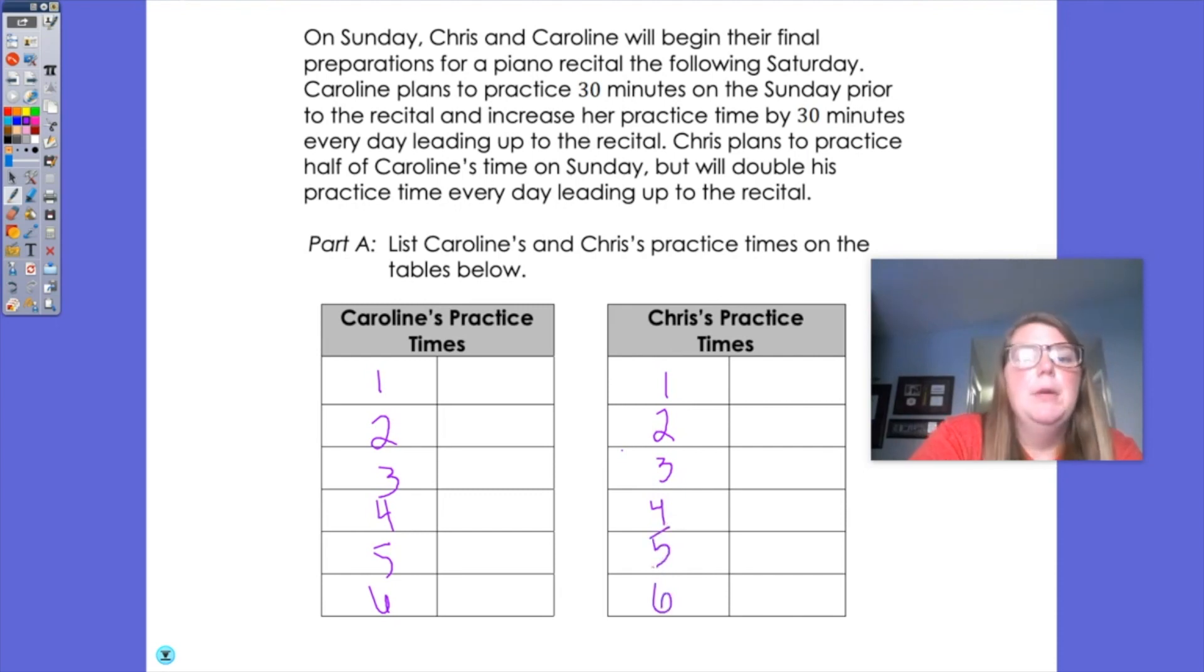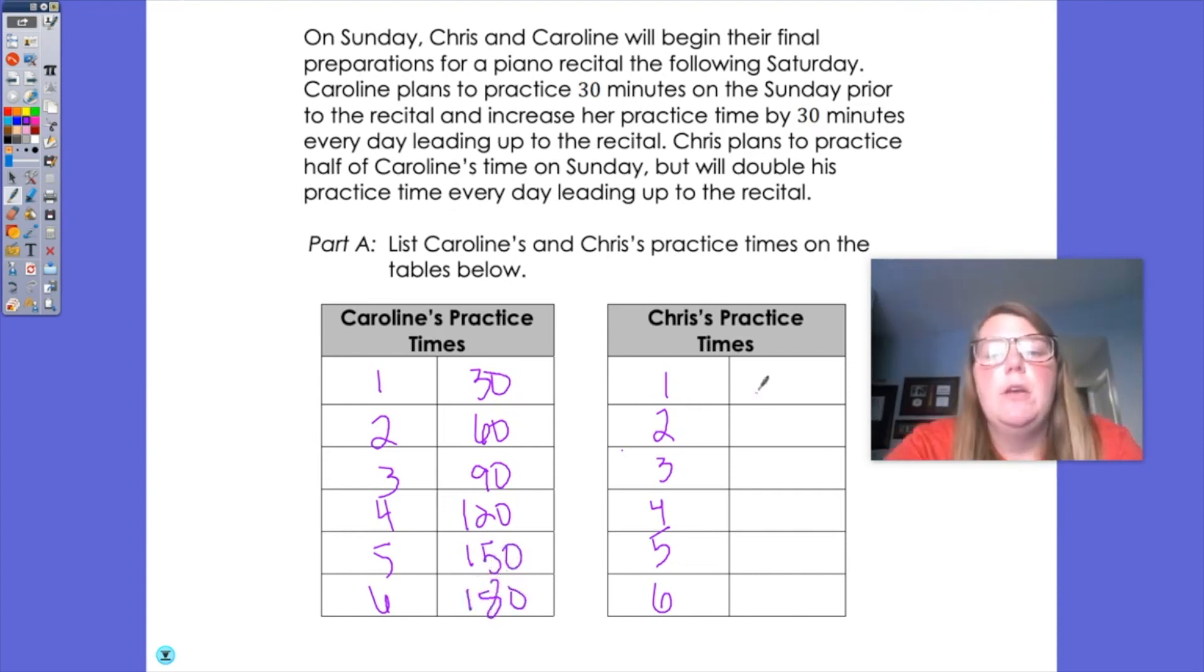So remember, Caroline is practicing 30 minutes, and then 60 minutes, then 90 minutes, 120, 150, and then 180. And then Chris is starting with half of her time, so 15 minutes. And then it says he's going to double, so times two would be 30, then 60, then 120, then 240, and then 480. So that would be their times that they would be practicing each of them.